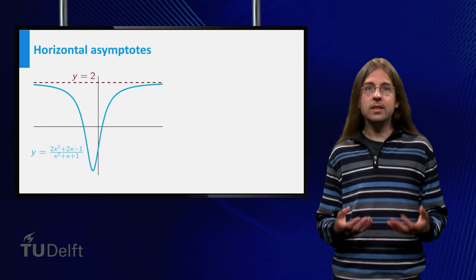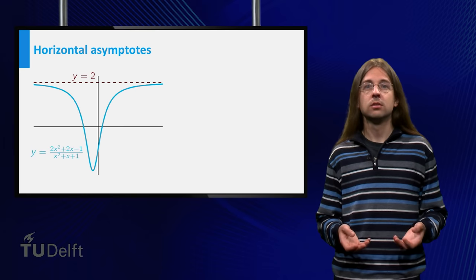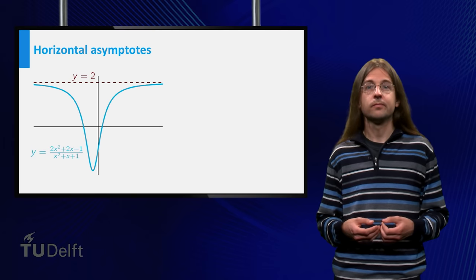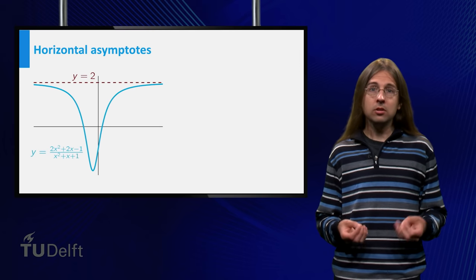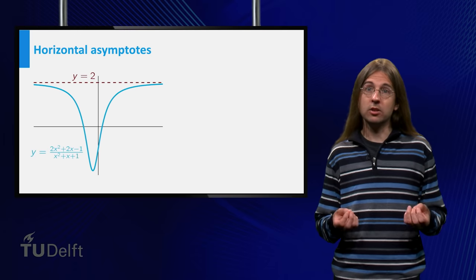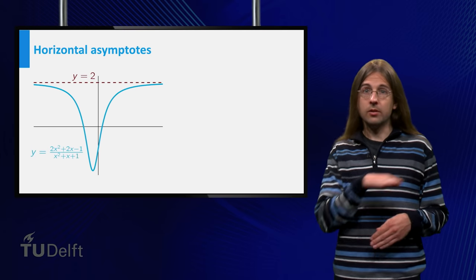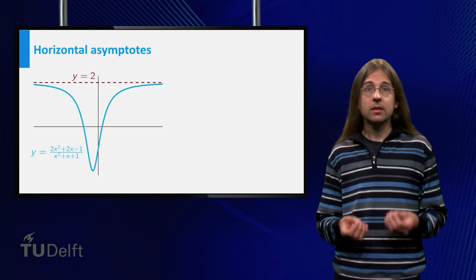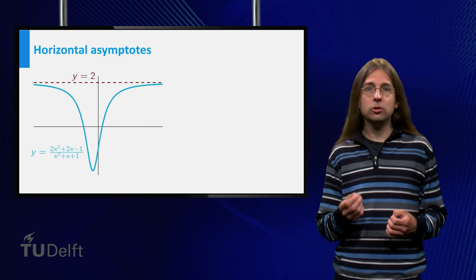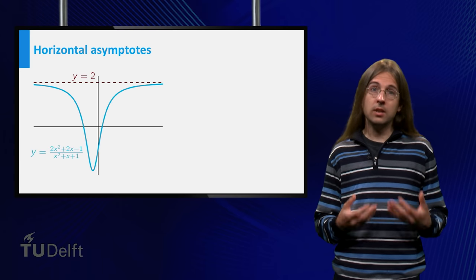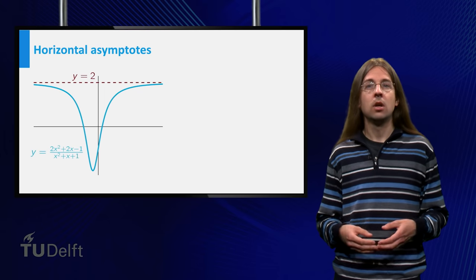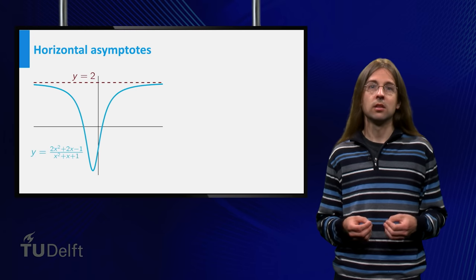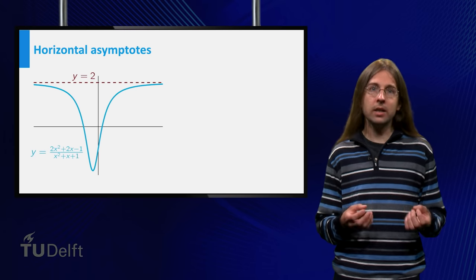In general, it is not easy to draw the graph of a rational function. A characteristic feature of graphs of rational functions are the asymptotes. For example, the function (2x squared plus 2x minus 1) over (x squared plus x plus 1) has a horizontal asymptote for x to infinity. This means that for very large x, the graph approaches a horizontal line very closely, in this case the line y equals 2. Notice that the graph also approaches this line for very large negative x, so it is also an asymptote for x to minus infinity.